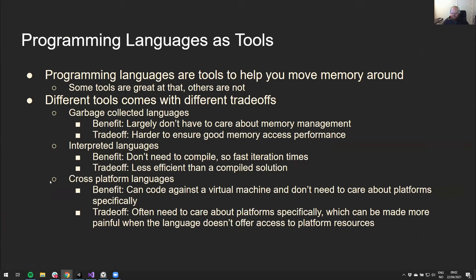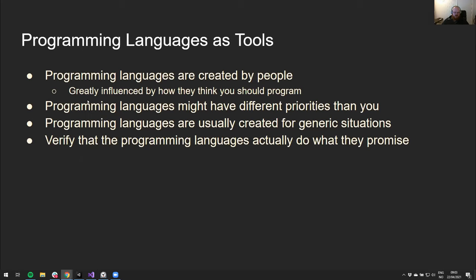Cross-platform languages like Java and C# let you code against a virtual machine without caring about the platform specifically — but that's great until you actually need to care about the platform. It's rarely the case that 'write once run everywhere' is true when the program gets more complicated. When that happens, it can be really hard to work in a platform-specific manner when the language does everything it can to avoid you talking about platforms. Programming languages are created by people, and those people greatly influence how you should program — the language's priorities might be very different from yours.